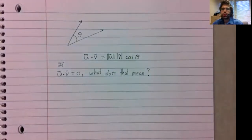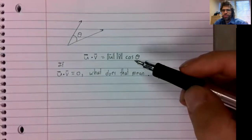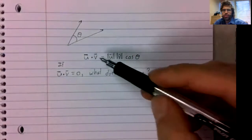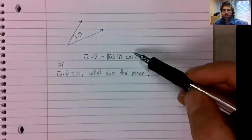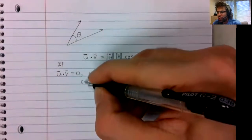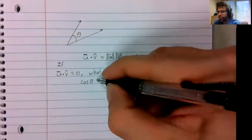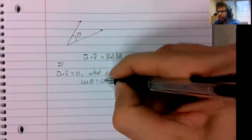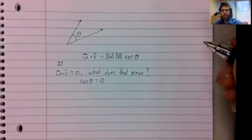We certainly don't have any kind of zero product property for dot products. But what this says is for the dot product to be zero, this product has to be zero. And since the norm of non-zero vectors are not zero, that tells us that the cosine is zero.